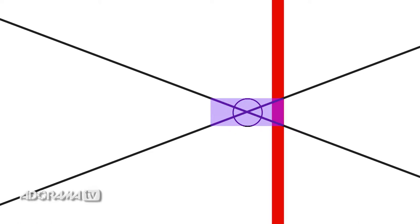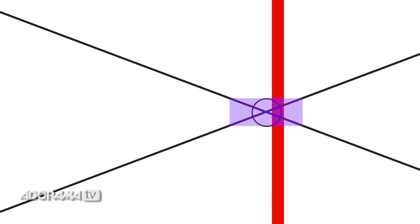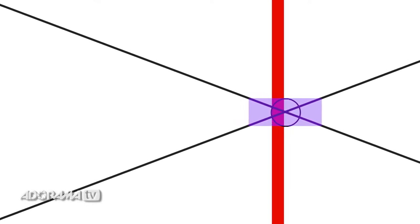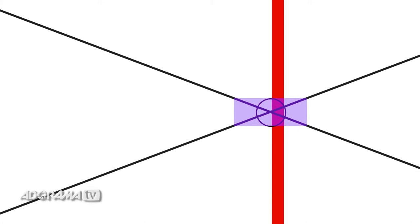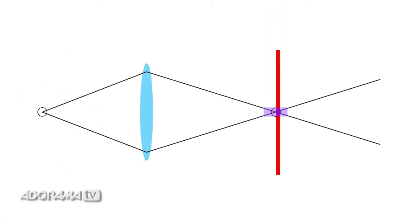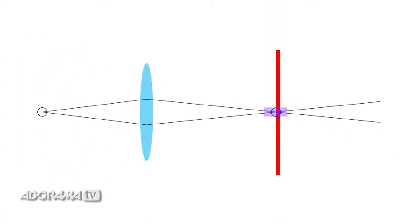Anything the size of that circle or smaller will be perceived as in focus. Our eyes can't really tell the difference between a perfect focus and something that's just slightly off focus. When we use a smaller aperture setting, that changes the convergence of our focus — it makes the range of the circle of confusion larger, and that's what gives us greater depth of field. The point of focus is inside the circle of confusion, but things in front and behind it are also inside the circle of confusion.